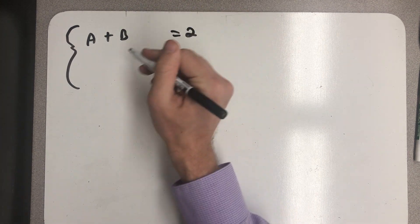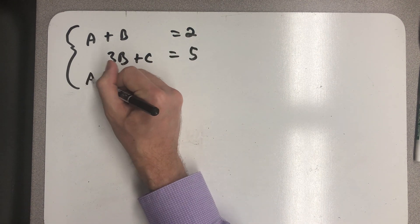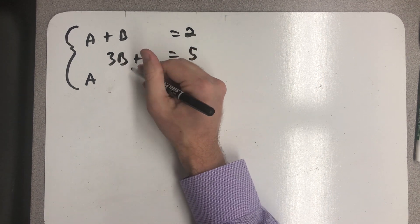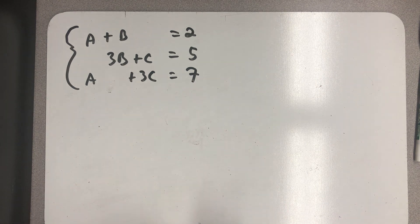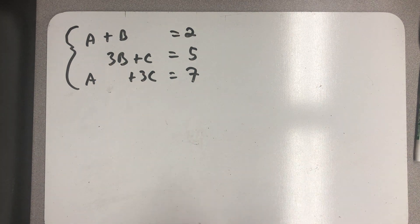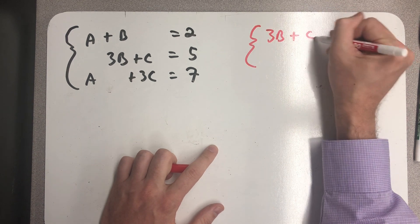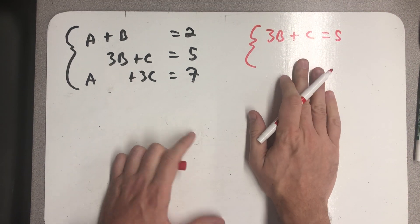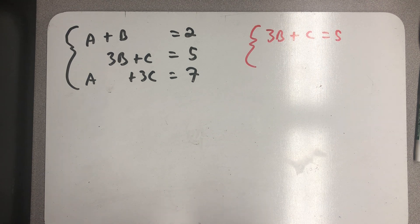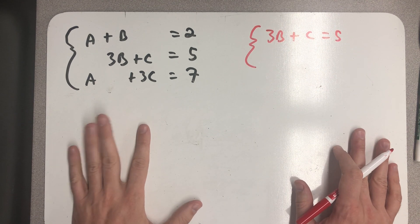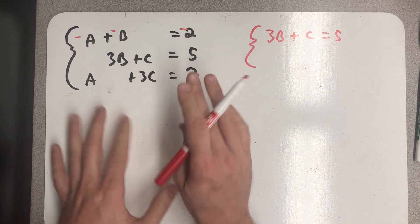A plus b was equal to 2. 3b plus c is equal to 5. And a plus 3c is equal to 7. I'm going to use those variables to continue because I can add the first and the third together in a nice way to get rid of the variable a. To do that, I can just take the opposite of the top equation and then add it to the second equation.